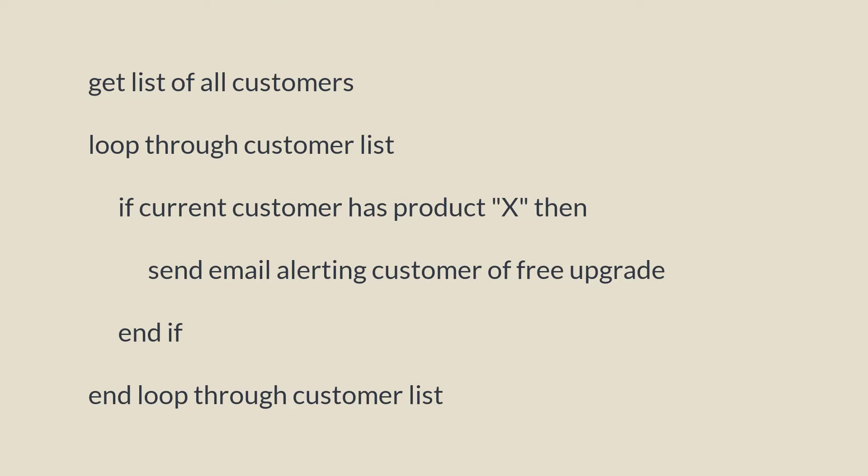It gets a list of customers, checks if they own a specific product, and then those customers will get an email about the update. Notice that it handles both a loop block of code and a decision block of code. You may also note the indenting that was used to make things easier to read and see what is within a given block of code.